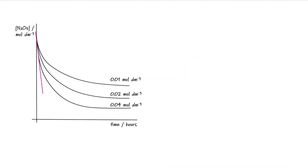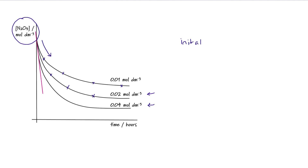In this experiment, we are following the concentration of the dinitrogen pentaoxide. As one would expect, because it's a reactant, over time the concentration is going to decrease. We can take measurements to track the change in concentration and when we plot these on a graph, we can draw a curve of best fit. The experiment was then repeated at a concentration of 0.02 mol dm⁻³, and then finally at an initial concentration of 0.04 mol dm⁻³.